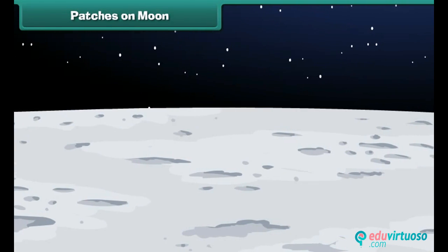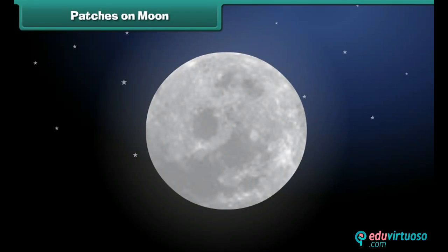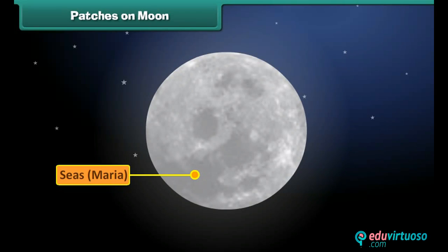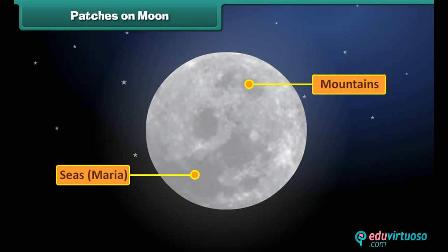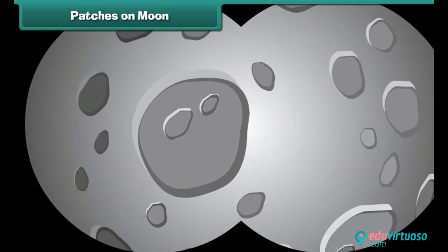Even though there is no liquid water on the moon, it has many interesting features such as craters, mountains, and lava plains. The dark patches on the moon's surface are plains called seas, or Maria. They are called Maria because early astronomers thought these areas were great seas. The lighter patches are mountains, and you can use a pair of binoculars on a clear night to see the craters formed by ancient meteor collisions.